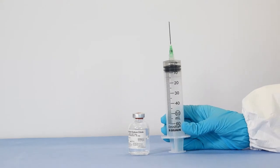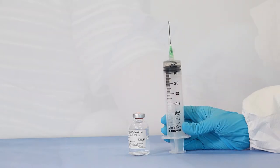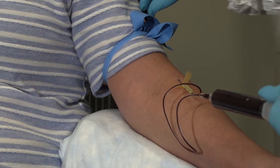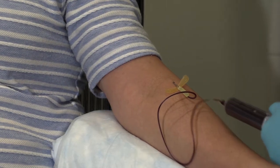Fill a 60-milliliter sterile syringe with 6 milliliters of citrate anticoagulant. Then draw 54 milliliters of blood from the patient, filling the syringe to 60 milliliters.